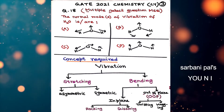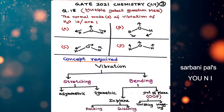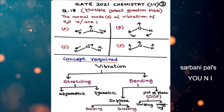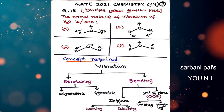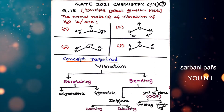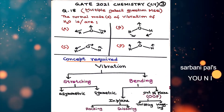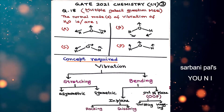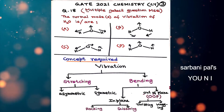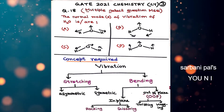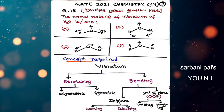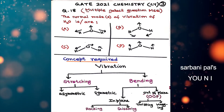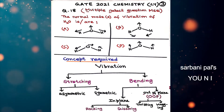The question is about the normal modes of vibration of water. Four structures are given, named A, B, C, D, and we have to identify which of these represent a normal mode of vibration of water. To understand all the pictorial representations of normal modes of vibrations of water, let us first discuss the theory required to answer this.